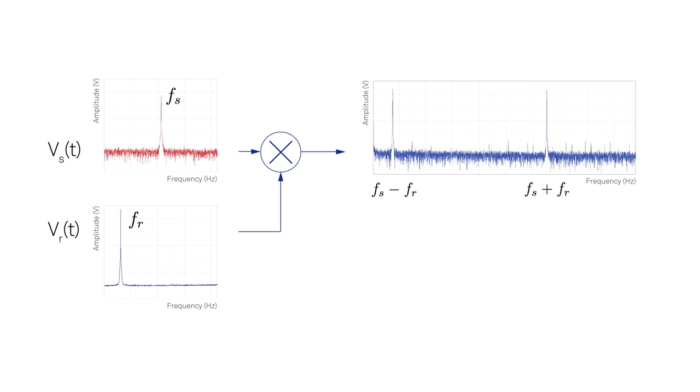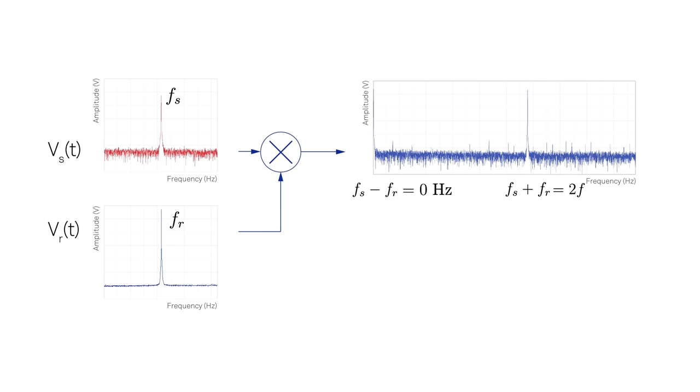For most lock-in applications, signal frequency and reference frequency are identical, and equal to f, so we end up with a component at the DC, or zero hertz, and another component at twice the frequency, or 2f.